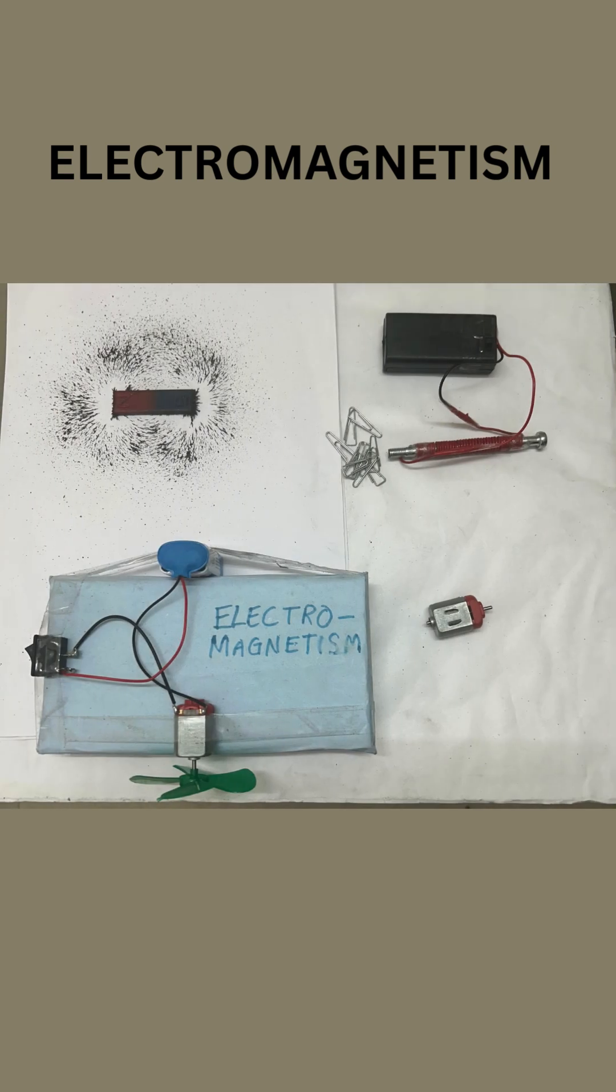Electromagnetism is when electricity and magnets work together. It's like a superpower that helps machines move, lights turn on, and even music play from speakers.